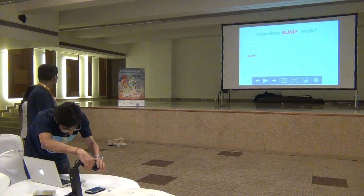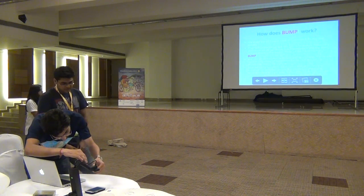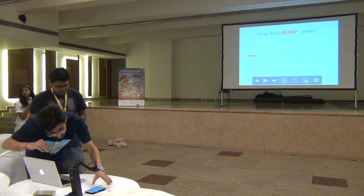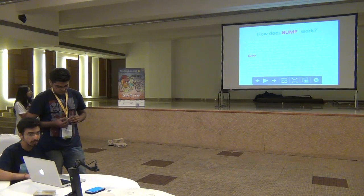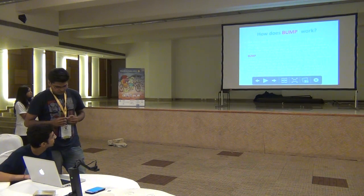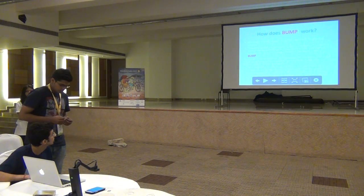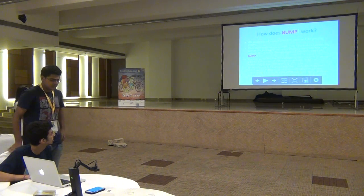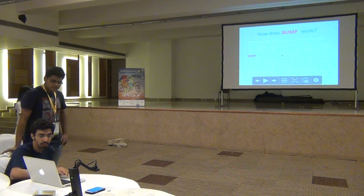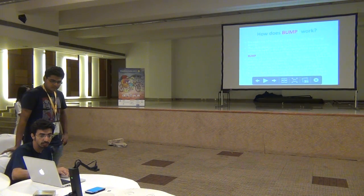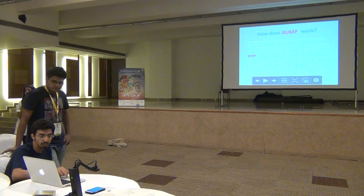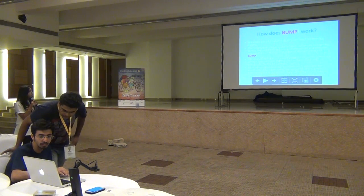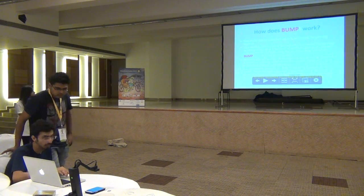How does Bump work? We are making use of the Google Maps API version 2 to show events happening around you. The notification radius is set — by default it's 5 km — so events happening within that range will be sent as notifications, or rather the user will be Bumped, shown on the Google Map on the Bump app homepage.